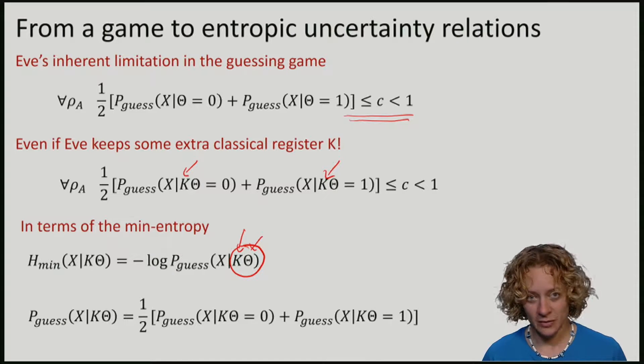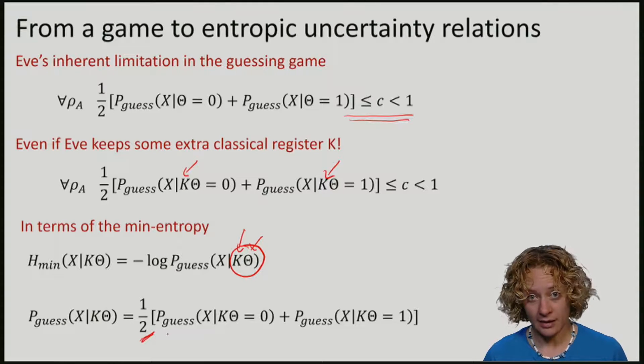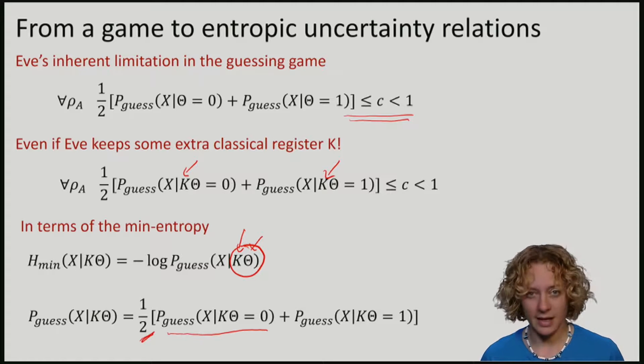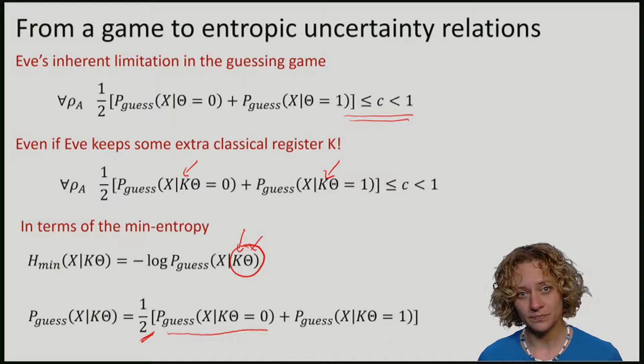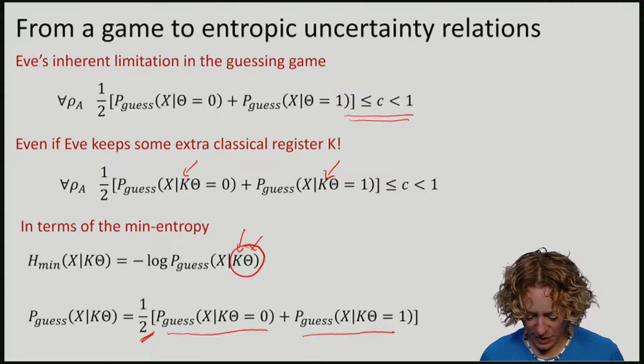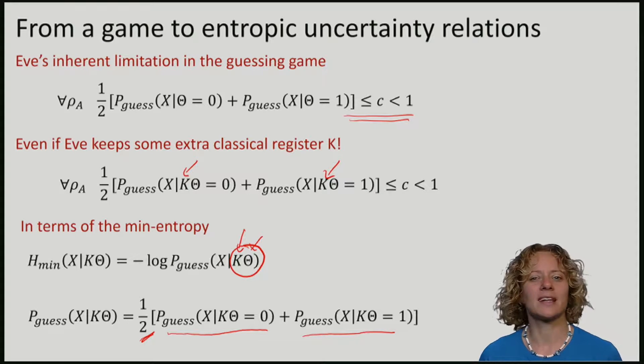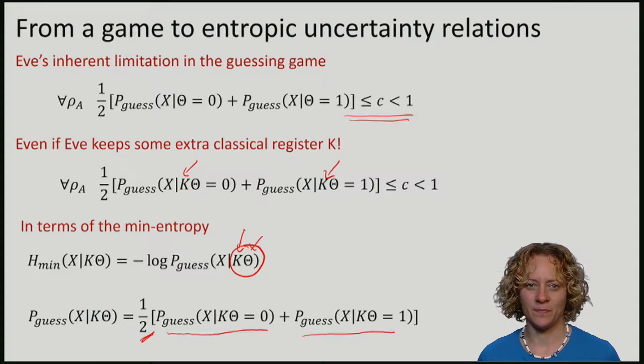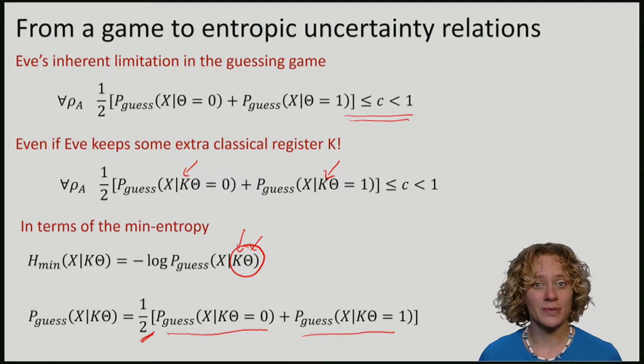So the guessing probability is nothing else than this expression. With probability half, we have theta being zero and then this is the probability that Eve guesses the outcome. And with probability half, we have the Hadamard basis and this is the probability that Eve manages to guess the outcome if Alice measured in the Hadamard basis. This is precisely the term that we saw above.